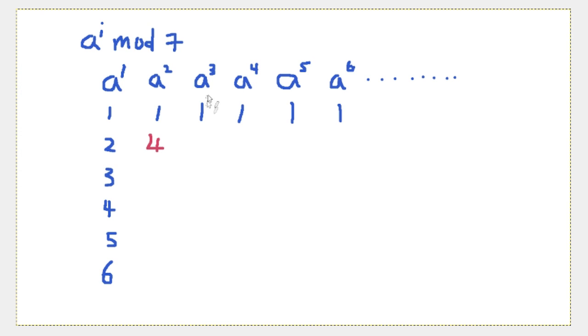So proceed to number 3, and we can see that it is actually 2 to the power of 3 is 8, so 8 mod 7 is 1. And 2 to the power of 4 is 16, and 16 mod 7 is actually 2. And we just proceed to do until the end of the table, I mean to complete the table.